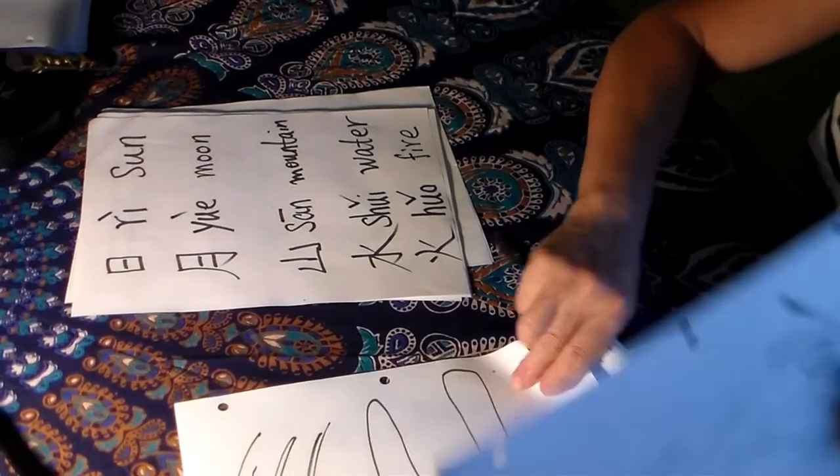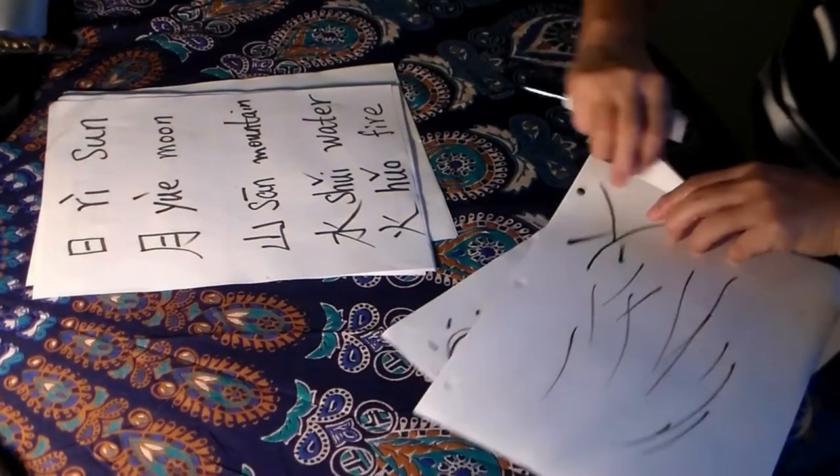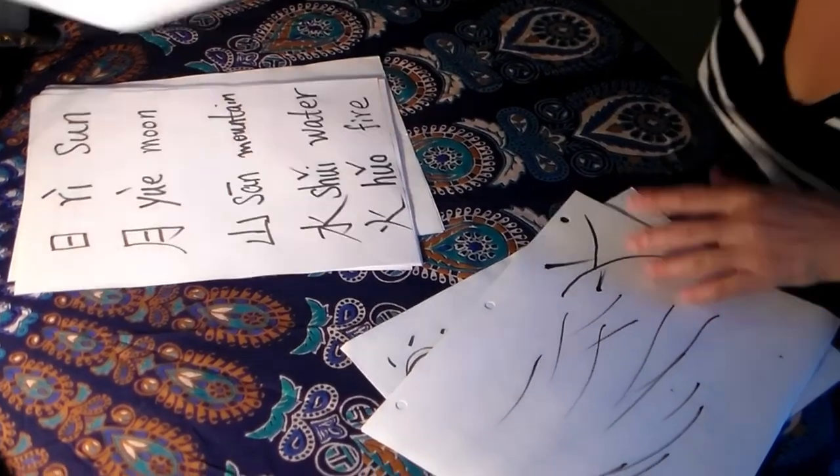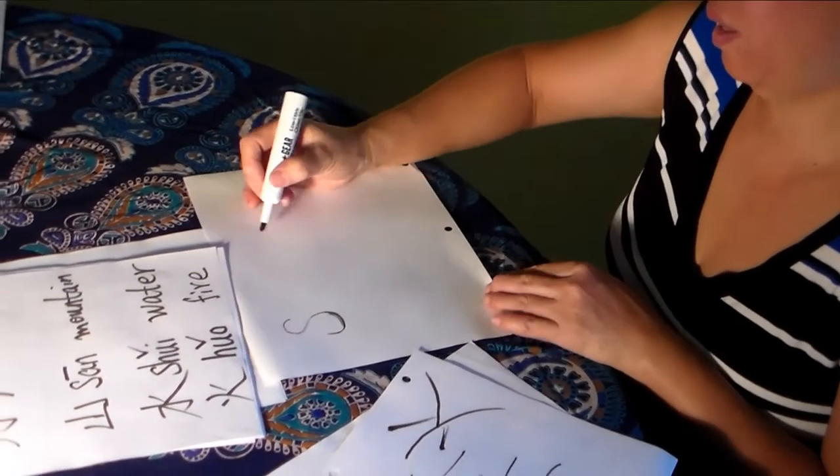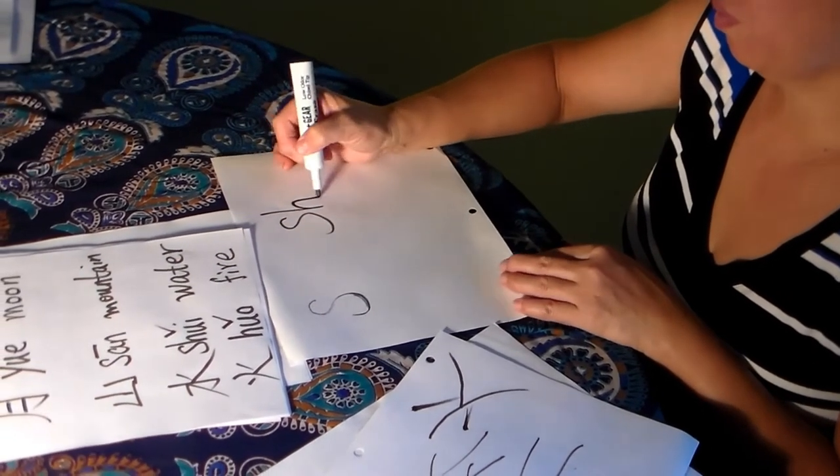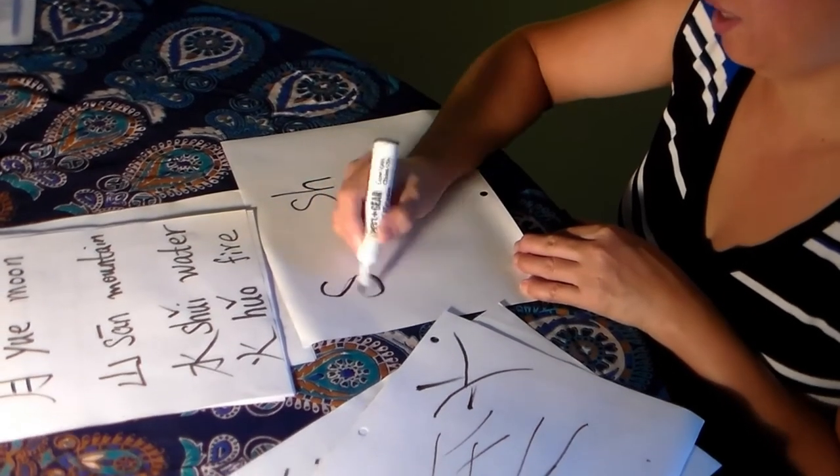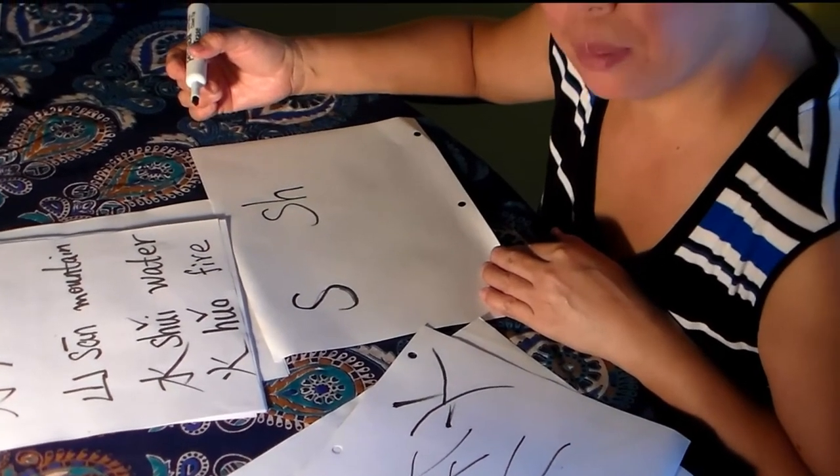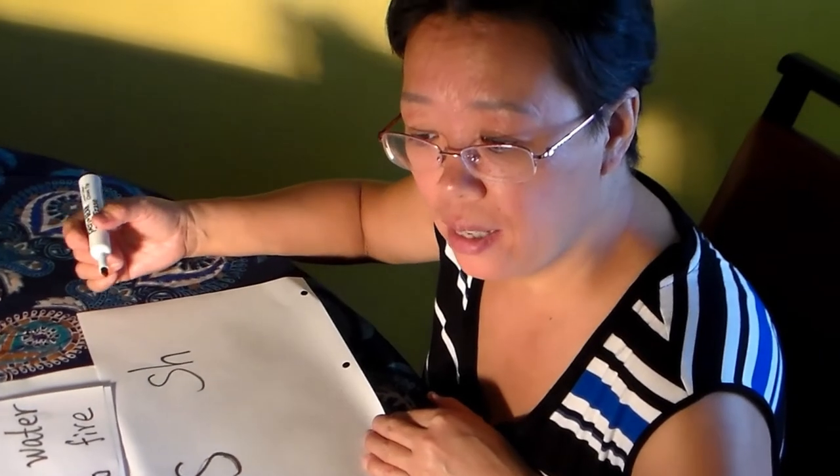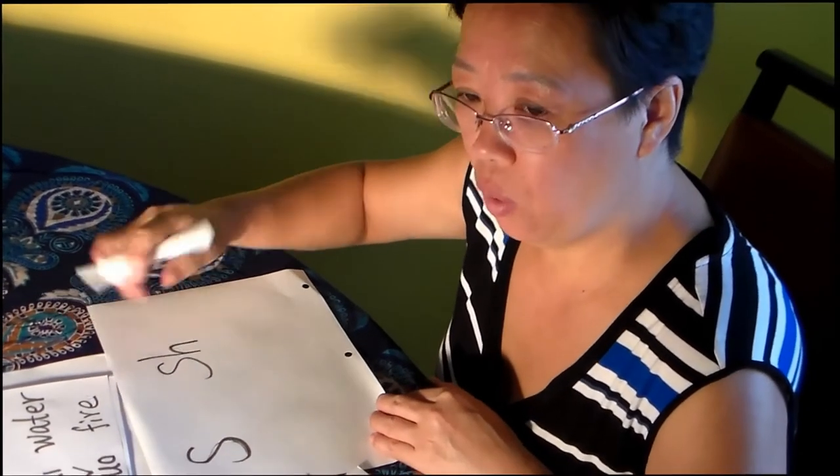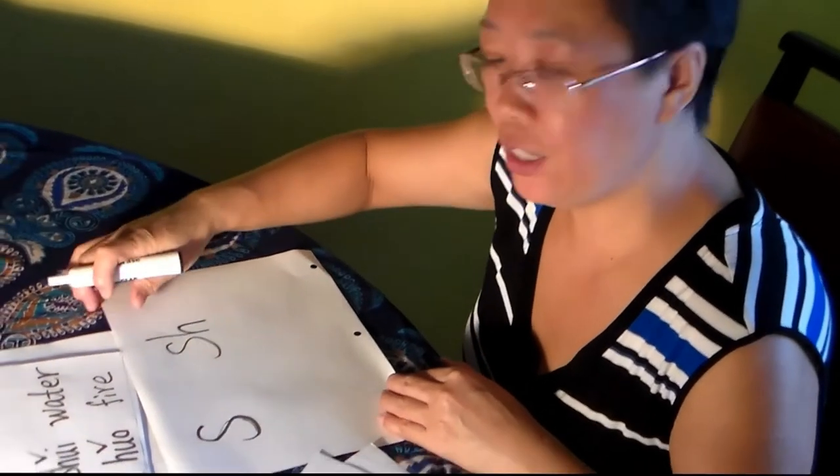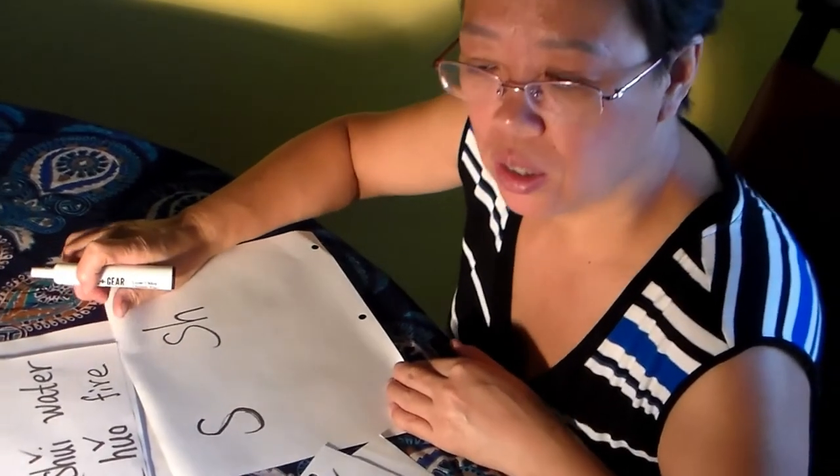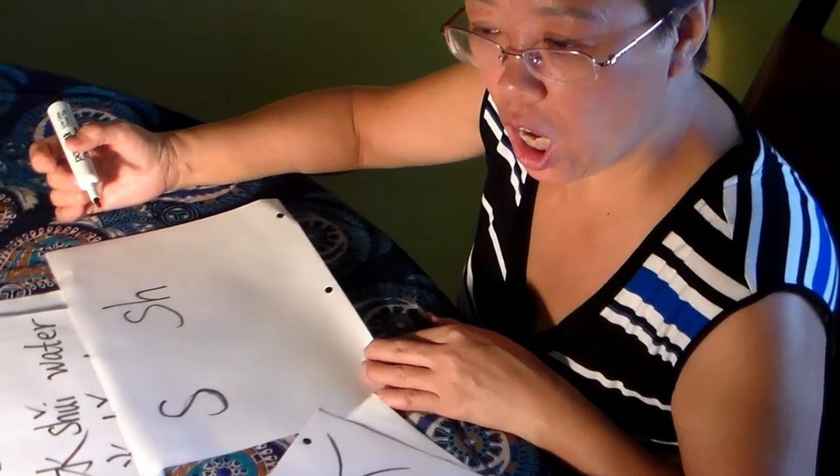S and SH. S and SH. S is S. Look at me, like a snake walking on the grass. S and SH is SH. It's your tongue, your tongue.